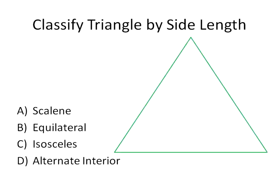By side length, does this triangle look to be scalene, equilateral, isosceles, or an alternate interior angle? I'm hoping that you said this one looks like it's equilateral — it's got the same length for all three sides.